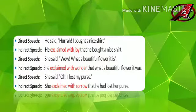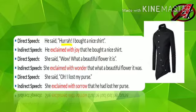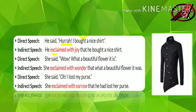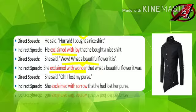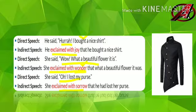More practice examples. 'He said, Hooray! I have bought a new t-shirt.' It's a sentence of joy, so write 'exclaimed with joy.' Next: 'Wow! What a beautiful flower' — it is a state of wonder, so write 'exclaimed with wonder.' And: 'Oh! I lost my purse' — expression of sorrow, so write 'exclaimed with sorrow.' Remember: first identify whether the sentence is exclamatory or imperative. If exclamatory, convert 'said' into 'exclaimed,' then identify joy, wonder, or sorrow, and write accordingly.